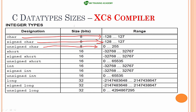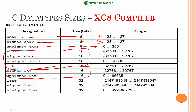In the XC8 compiler, short, signed short, and unsigned short hold 16 bits, that is 2 bytes. Signed int and unsigned int also hold 2 bytes. Signed long, unsigned long, and long hold 32 bits, that is 4 bytes.